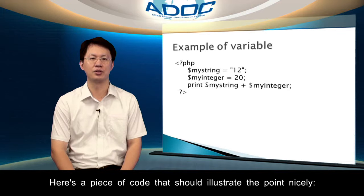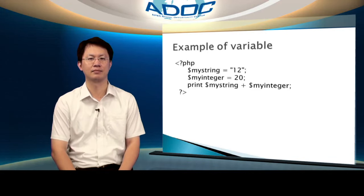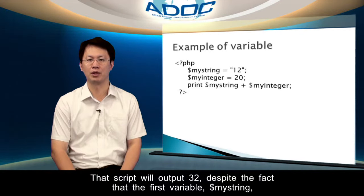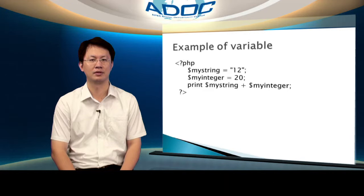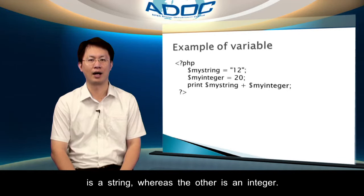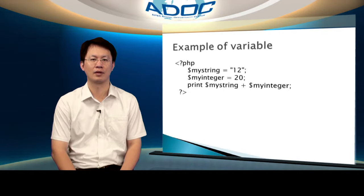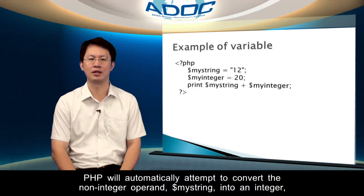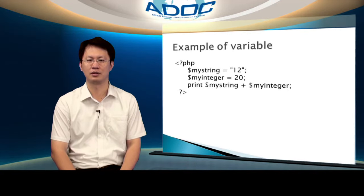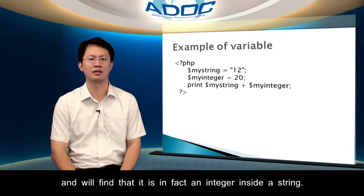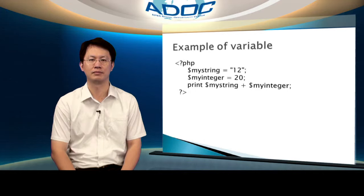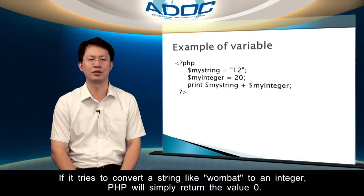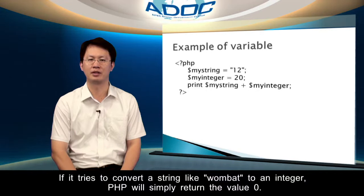Here is a piece of code that should illustrate the point nicely. That script will output 32, despite the fact that the first variable, my string, is a string, whereas the other is an integer. PHP will automatically attempt to convert the non-integer operand, my string, into an integer, and will find that it is in fact an integer inside a string. If it tries to convert a string like 'Wombat' to an integer, PHP will simply return the value 0.